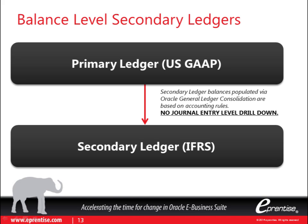The thing to keep in mind with the balanced-level secondary ledger is that it is strictly a balance-level representation. There is zero journal entry-level drill-down. So there's very little transparency between the secondary and the primary ledger. Someone auditing the results of your secondary ledger would actually have to walk back through the accounting rules that you set up when creating the secondary ledger.